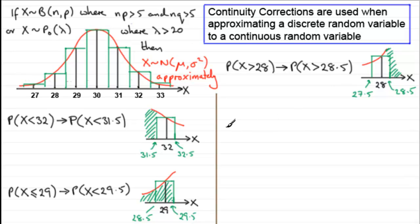And here's another one for you. You might get something like this where you've got to work out the probability that X is greater than or equal to 31. What would be our continuity correction for this? Again, pause the video and come back in a moment.